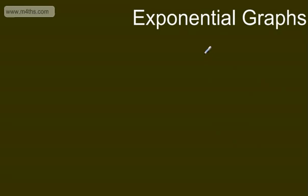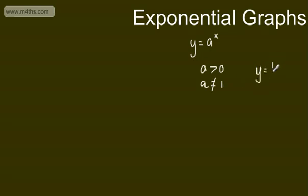Next are exponential graphs. These are often called growth and decay functions, and they're written in the form y is equal to a to the power of x. a has to be greater than 0, and a cannot be equal to 1. If you draw the graph y is equal to 1 to the x, you'll see that you get a pretty boring graph. For now I want to get the rough idea of the shape.